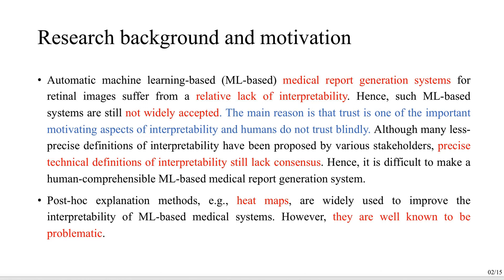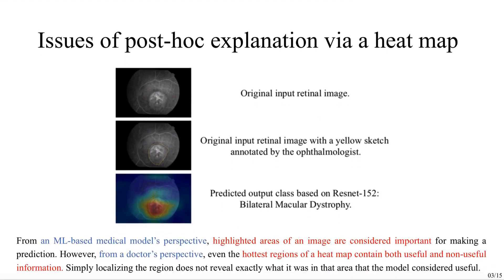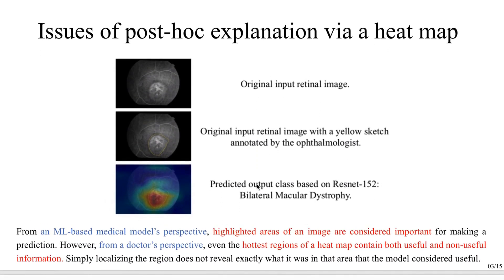Post-hoc explanation methods, such as HEMAPs, are widely used to improve the interpretability of ML models. However, they are well-known to be problematic. Just to give you an example, the third row of this image shows a gradient-related HEMAP. From an ML-based model's perspective, highlighted areas of an image are considered important for making a decision. However, from a doctor's perspective, even the highlighted region of a HEMAP contains both useful and non-useful information. Simply localizing the region does not reveal exactly what it was in that area that the model considered useful.